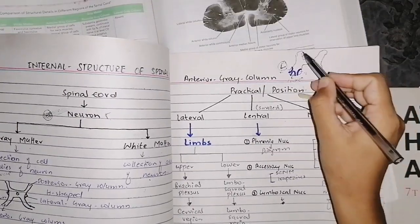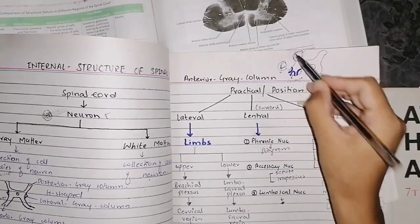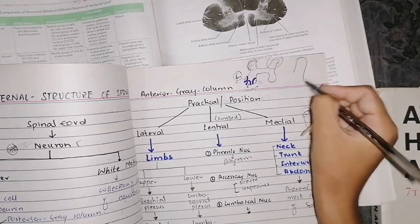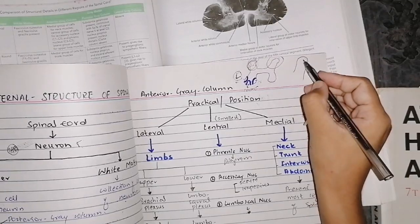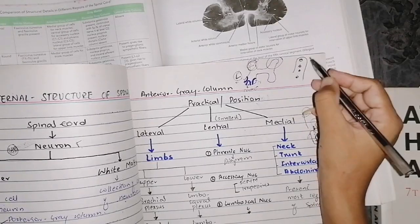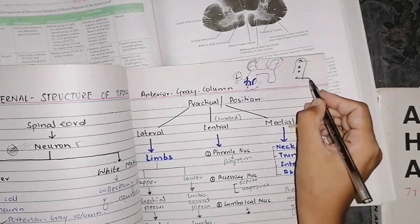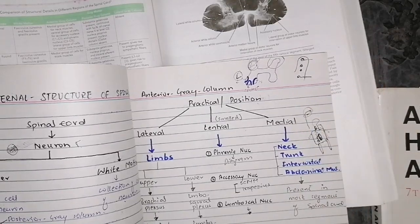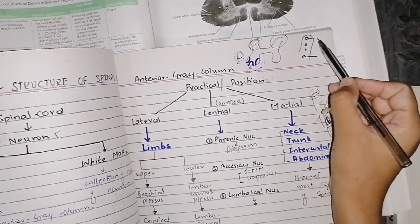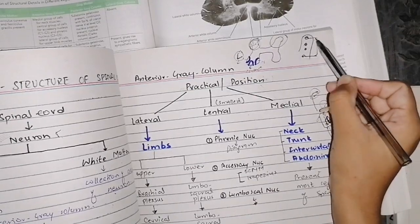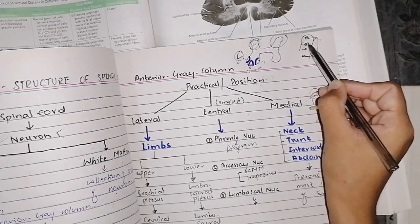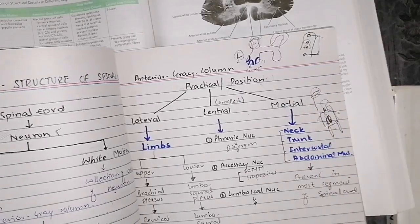Now let's move to the posterior gray matter, which is relatively straightforward. You have to remember that there are four nuclei present. The top is the apex and the bottom is the base. The first two nuclei are present throughout the spinal cord; one is only in the cervical region and one is only in the thoracic region.